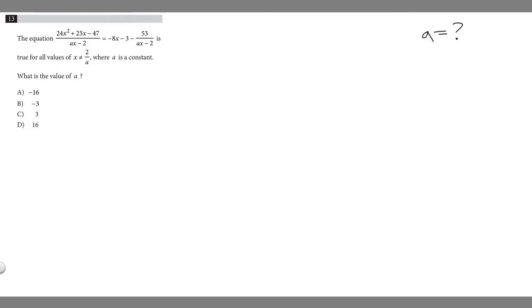In order to do that what we want to do is remove the ax minus 2 on the bottom. So we can do that by multiplying both sides by ax minus 2. So that would get rid of this here and then get rid of this.